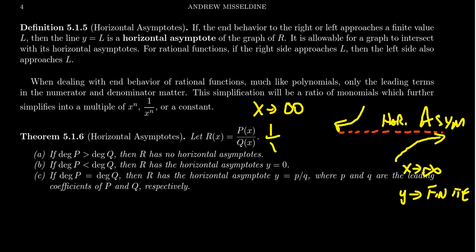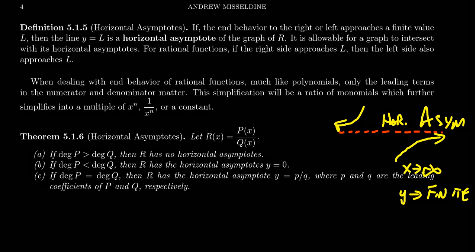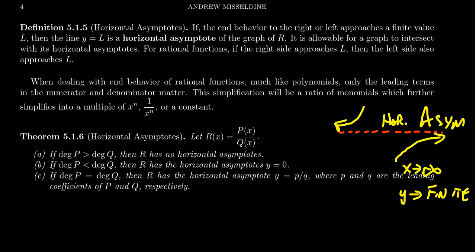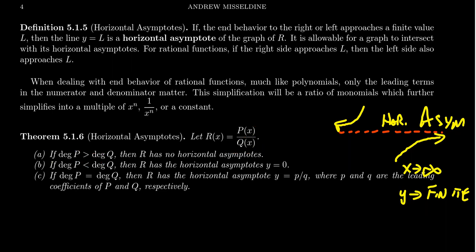We want to talk about these principles a bit more. What type of horizontal asymptotes can we anticipate for a rational function? When the top has a bigger degree than the denominator, we have an improper fraction — a top-heavy function. In that situation, you actually have no horizontal asymptote. It'll be approximately a polynomial, meaning it'll go off towards infinity or negative infinity by the same rules we used when we talked about polynomial functions.